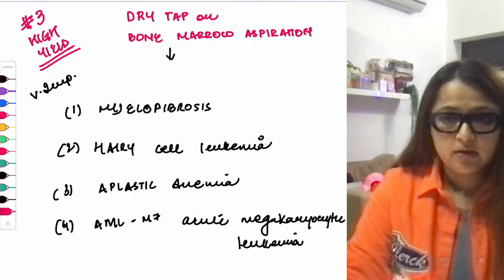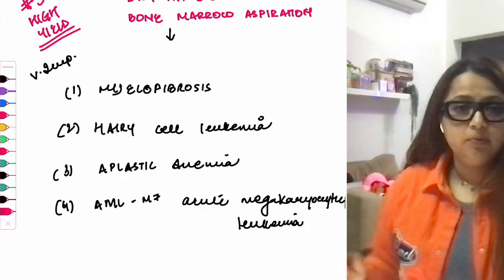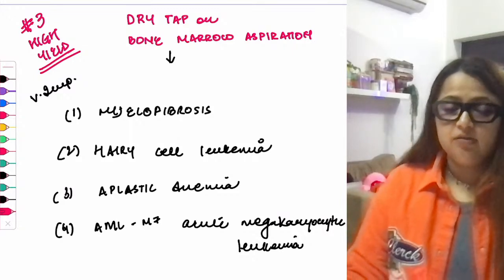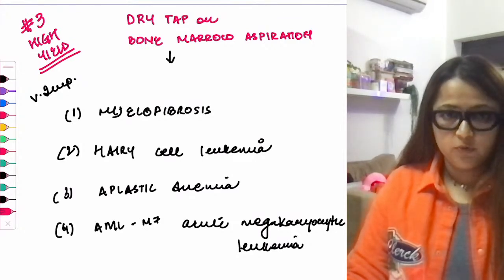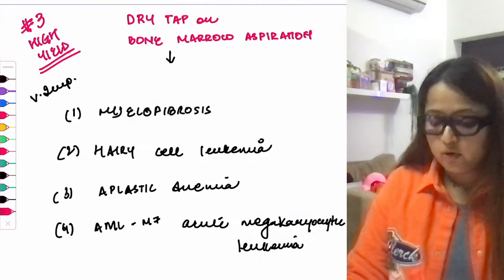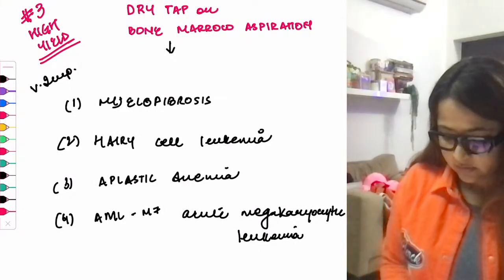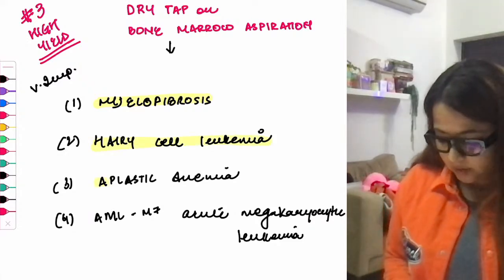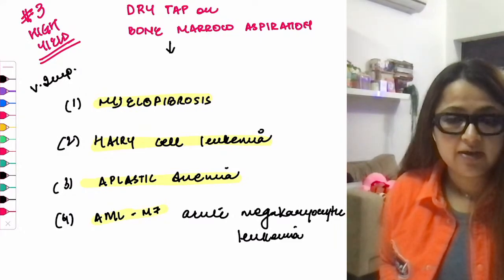We'll begin with an important high-yield topic for both INI-CET and NEET PG — conditions that lead to a dry tap on bone marrow aspiration. That means whenever you try to do a bone marrow aspiration, you don't get anything. The conditions are: number one, myelofibrosis; number two, hairy cell leukemia; number three, aplastic anemia; and number four, AML M7, that is acute megakaryocytic leukemia.